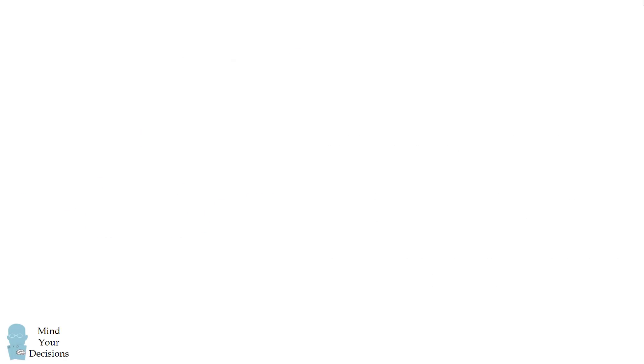But there's another way that involves a geometry visualization. So let's plot as follows. We have time on the horizontal axis and the elevation of the person on the climb on the vertical axis.